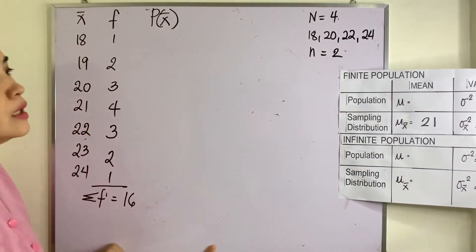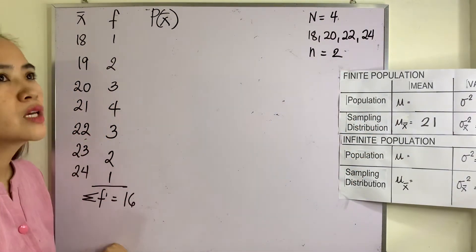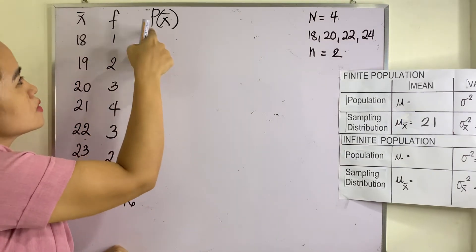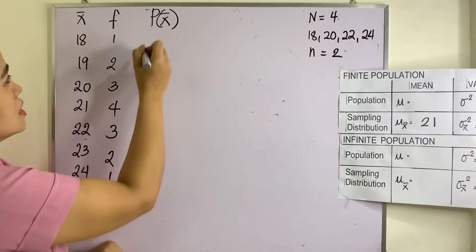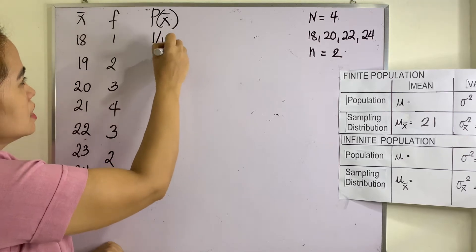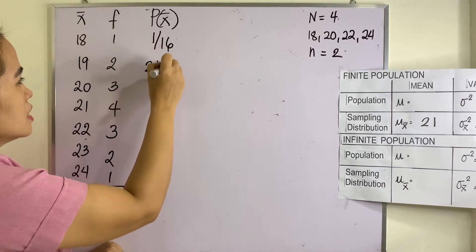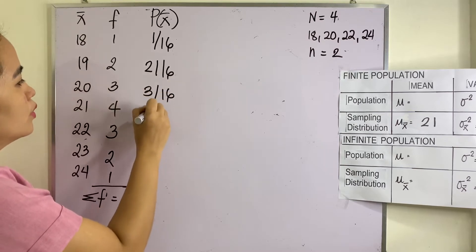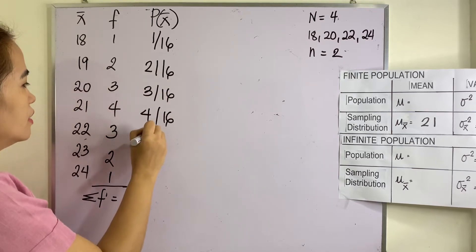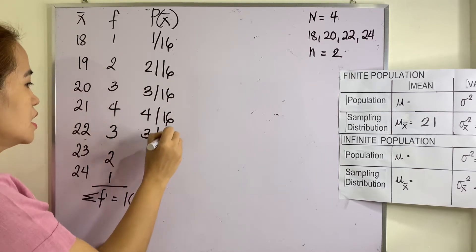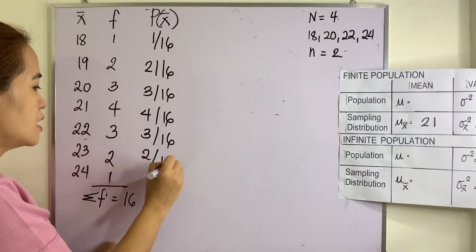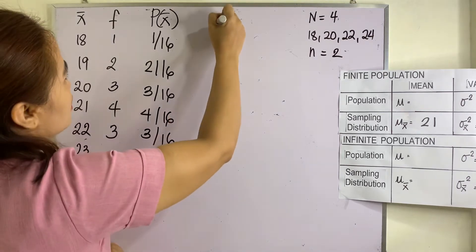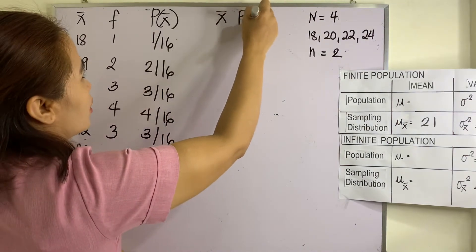So the probability — using the formula, which is the summation of x-bar times the probability — this is equivalent to 1 over 16, 2 over 16, 3 over 16, 4 over 16, 3 over 16, 2 over 16, and 1 over 16.